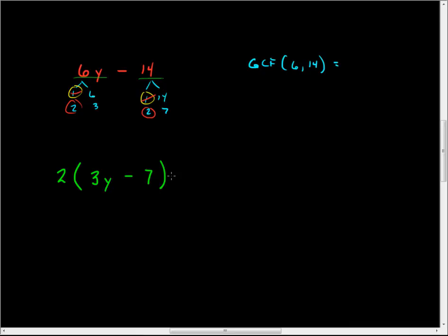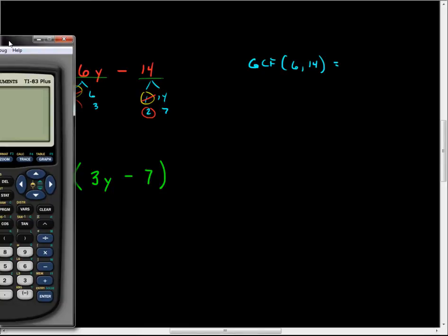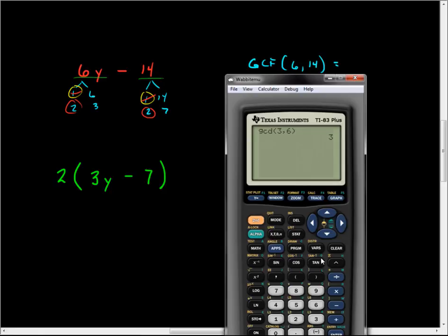So, see, factoring's really not that bad. The part that's typically the worst is trying to find this greatest common factor. That's usually tough. So, just understand that if you have use of your calculator, you could have used your calculator to find this greatest common factor as well. You just simply say, math. Scroll over to num. You can press the up arrow and get immediately to number 9 or you can simply press the number 9, and it will load it right into your home screen. Then you put in the two numbers that you want separated by a comma. Press enter. It will give you the number that you have to put out front.